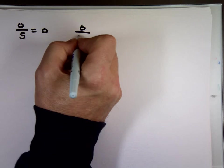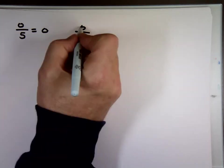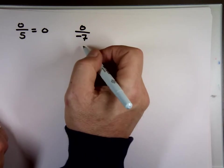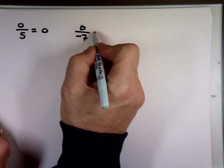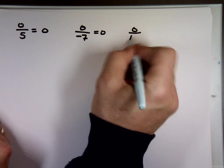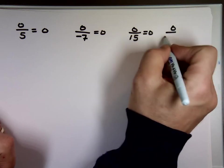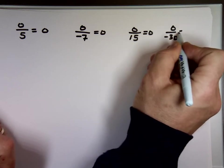Zero divided by... I should have a retract. I'll just leave that statement alone for now. What's zero divided by negative seven? Zero. What is zero over 15? Zero. What's zero over negative 30? Zero.